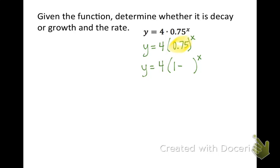In order to know what number goes here, take 1 minus 0.75, you will get out 0.25. So here's our equation. It's the same equation, it's just written in a different format.